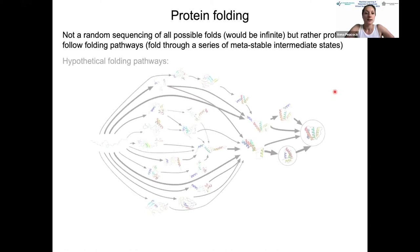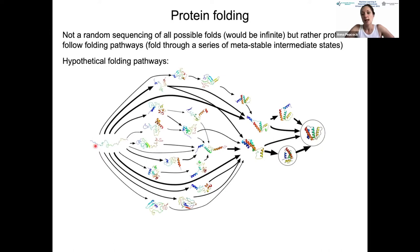In this cartoon, an unfolded peptide ultimately reaches the correct folded structure through a series of metastable intermediate states. There may be different pathways proteins can follow, but what you see is that small domains fold first, templating subsequent domains, rather than randomly exploring every possible conformation.